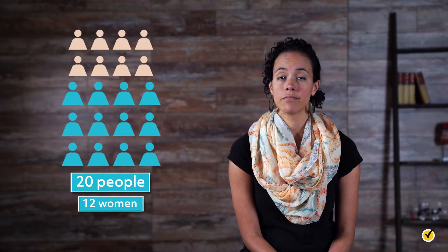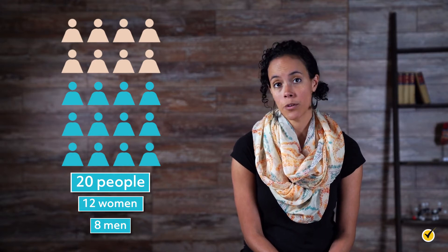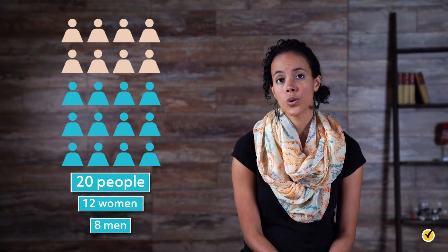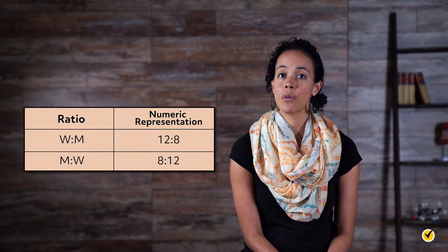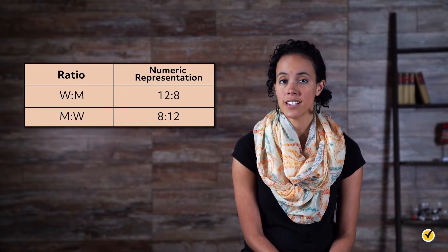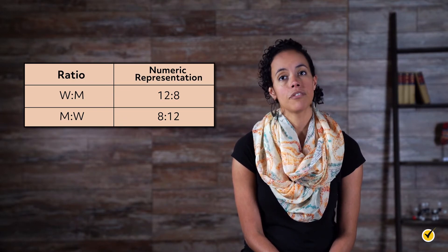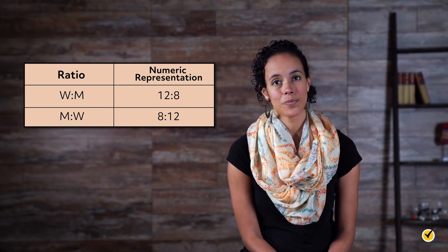For example, let's say that you have a room of 20 people comprised of 12 women and 8 men. The two categories are men and women, so your ratios would look like this. The ratio of women to men is 12 to 8, and the ratio of men to women is 8 to 12.